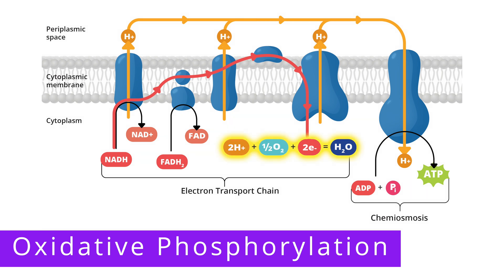Oxygen combines with electrons and hydrogen ions to form water molecules — we start with six oxygen molecules and end up with six water molecules. With anaerobic respiration, since the final electron acceptor is a substance other than oxygen, the final product will be something other than water.